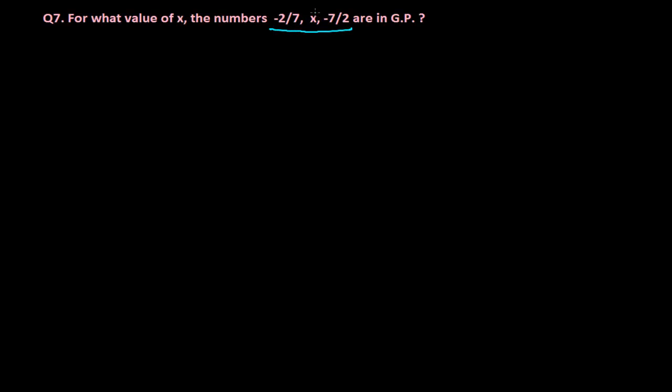But what will be the value of x? First let's write whatever we have got here. We have got minus 2 by 7, x, and minus 7 by 2. These are in GP, in geometric progression.